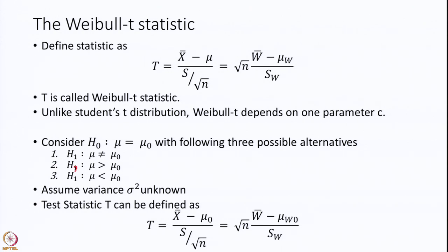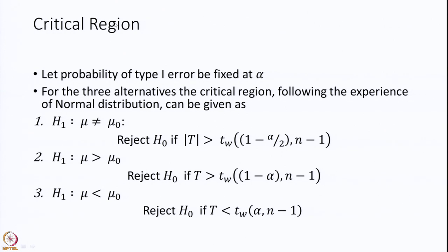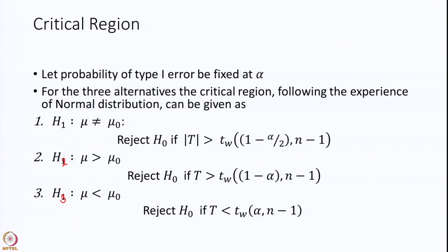The three alternatives are: H1: mu is not equal to mu 0; H2: mu is greater than mu 0; H3: mu is less than mu 0. We straight away assume that sigma square is unknown. Then the t statistic as defined can be used for testing the hypothesis that mu is equal to mu 0. Let us define what the critical region will be. Recall what we did in the past and follow the same steps. If we fix the Type 1 error at alpha, then for testing the null hypothesis against the three alternatives: